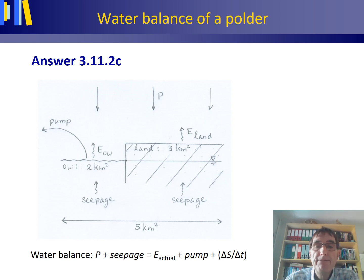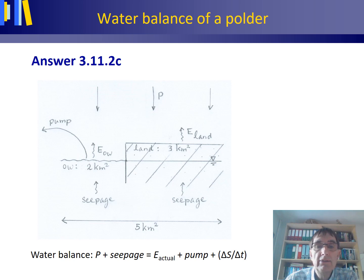And then we have delta S / delta T, the change in storage during the year. If this is a positive number it means that your water table and your open water level have increased. If it's a negative number it means that you have a lowering of your water table and your open water level during the year.